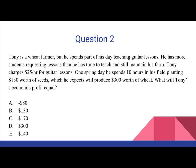What will Tony's economic profit equal to? A, negative $80. B, $130. C, $170. D, $300. Or E, $140.